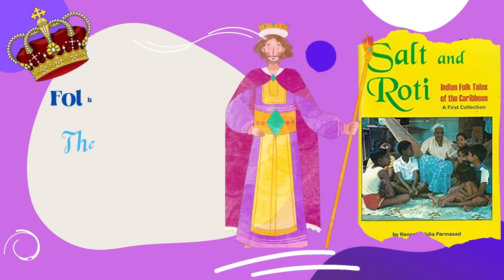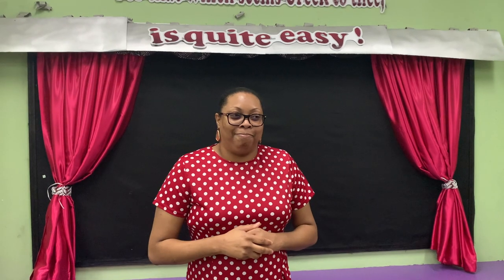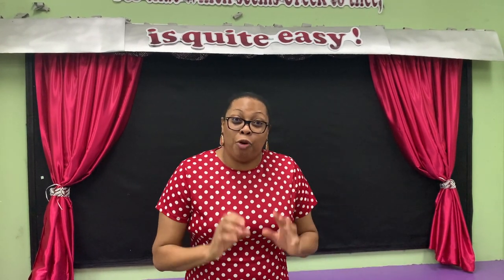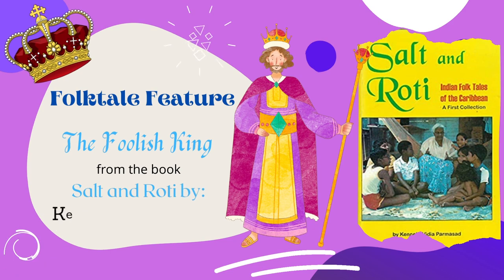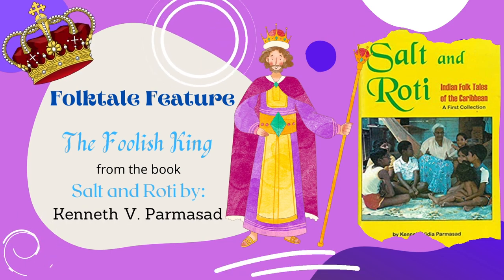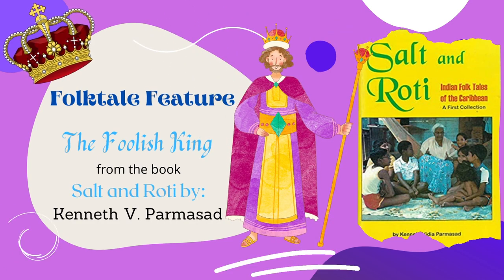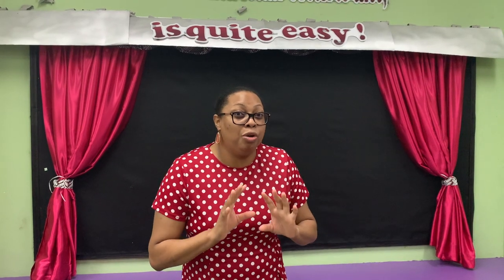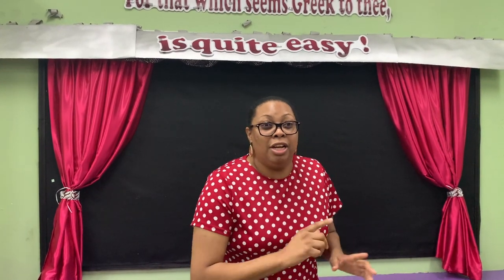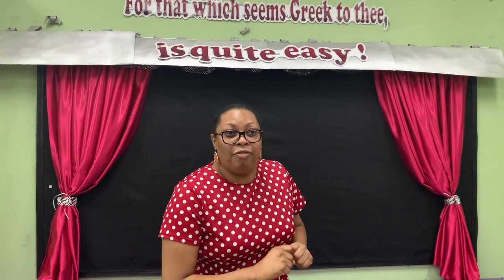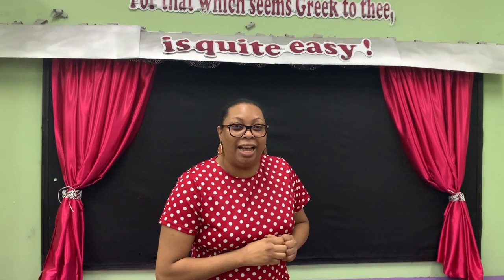Now let's look at our featured folktale for this week. This week's featured folktale comes from the book Salt and Roti by Mr. Kenneth Parmesan. The name of the folktale that we'll be featuring this week is called The Foolish King. Look out for a copy of that story on the TSS Virtual Library and be sure to dramatize any scene except the one that you see in this video. Now let's go to the dramatized scene from The Foolish King from Mr. Parmesan's book Salt and Roti.